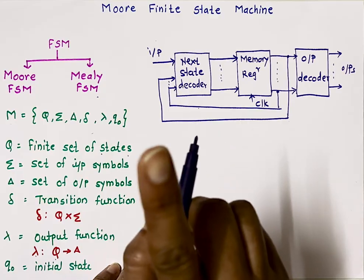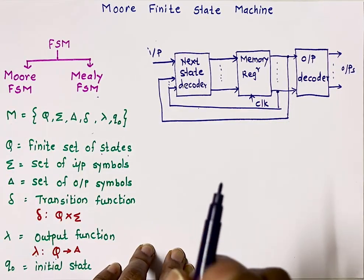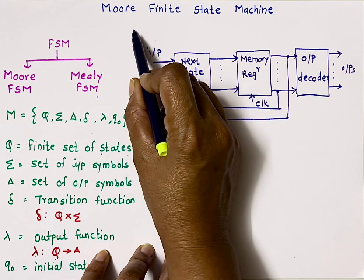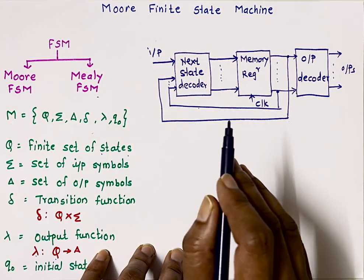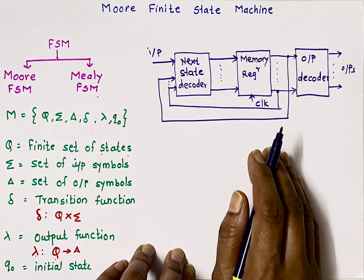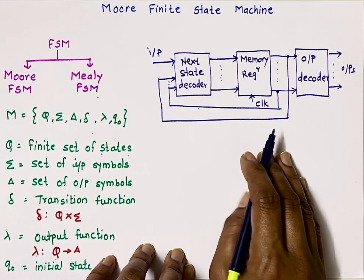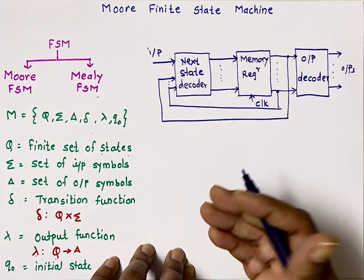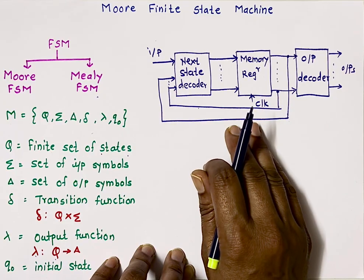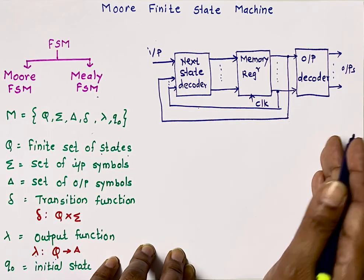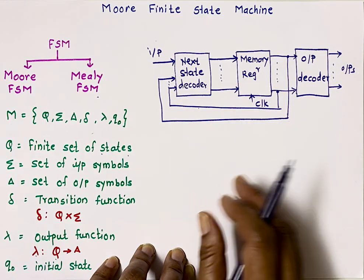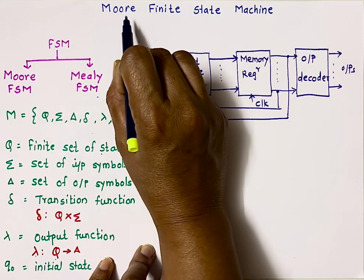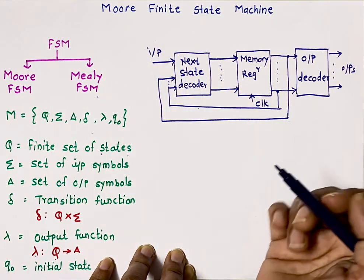Moore FSM is where output depends on present state only. So for every state, there is one fixed output. That is why Moore machine is more complex as compared to Mealy machine — it has more number of states. When we have more number of states, we need more flip-flops to design the circuitry. When we have more flip-flops, they will consume more power and occupy more chip area. So Moore machines are always more complex as compared to Mealy machines.